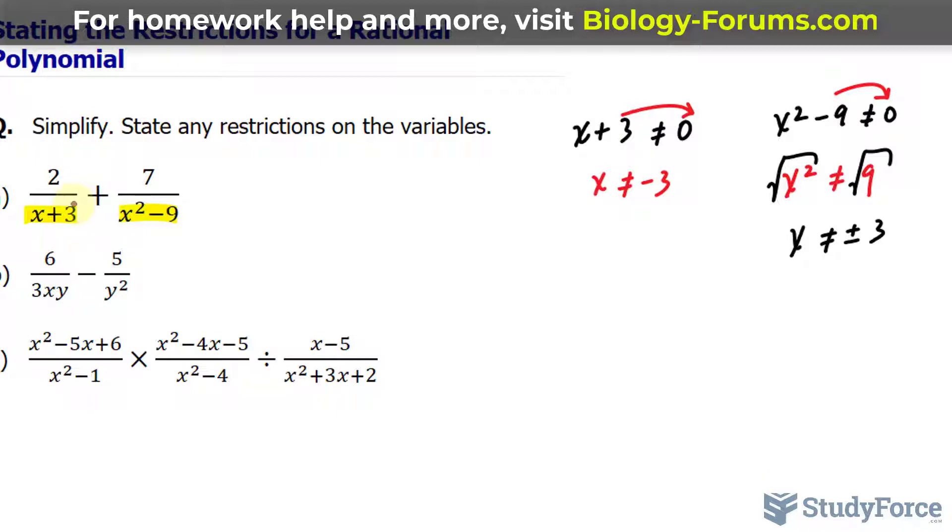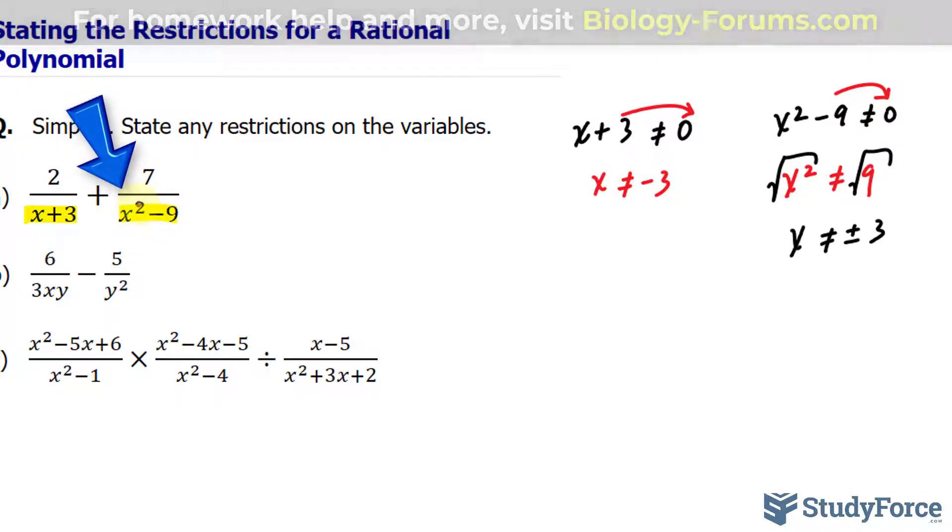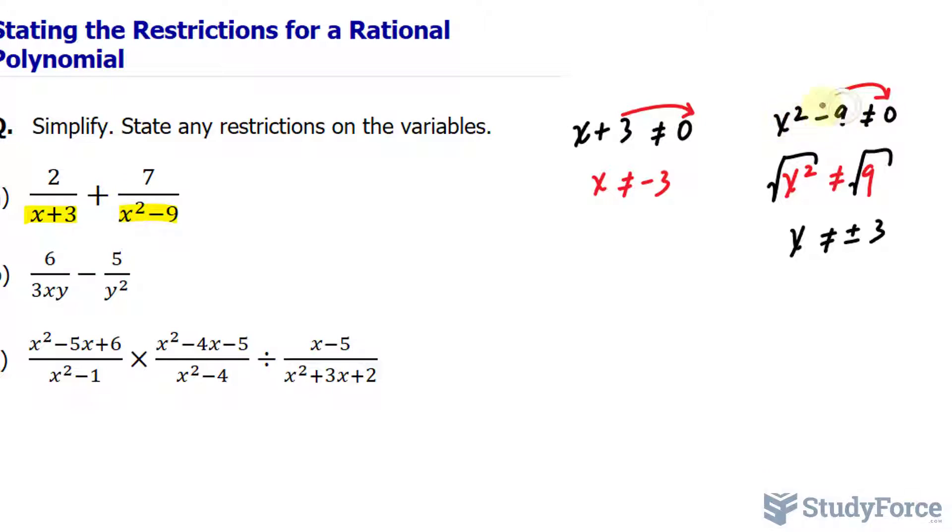Before we combine these, in order for us to simplify, this expression is factorable. Notice that x to the power of 2 minus 9 is a difference of squares. I knew that because both of these are perfect squares and they're being subtracted. So I can break down x to the power of 2 minus 9 as x minus 3 and x plus 3. Therefore, this expression is what you see right here.